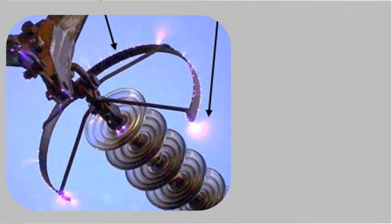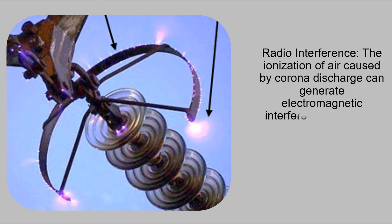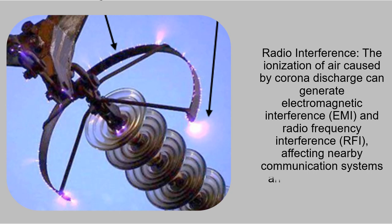Radio interference: The ionization of air caused by corona discharge can generate electromagnetic interference (EMI) and radio frequency interference (RFI), affecting nearby communication systems and radio equipment.